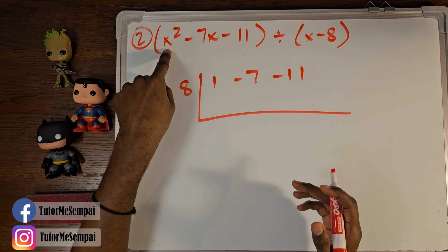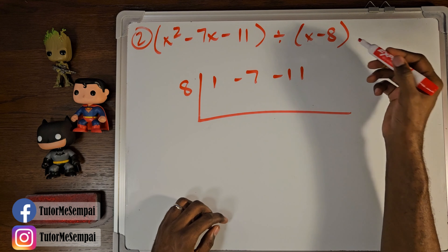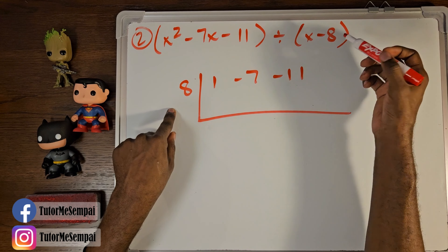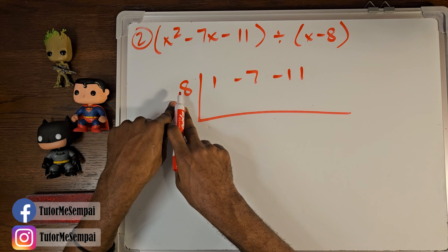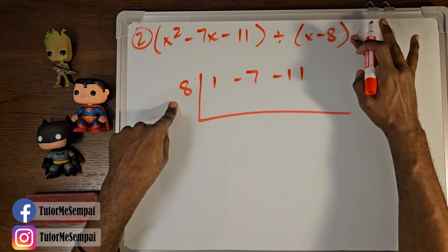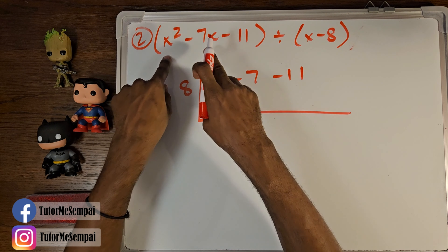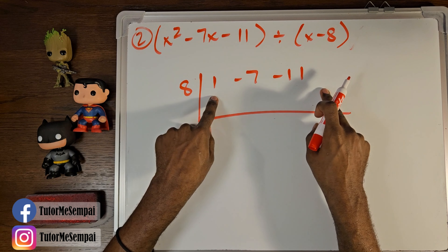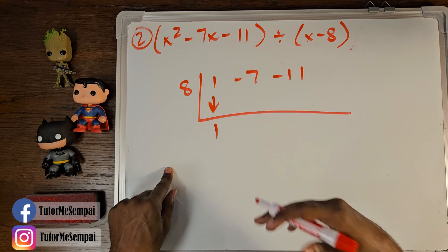In our second example, we have x squared minus 7x minus 11, divided by x minus 8. We're going to set it up the same way. Remember, we're finding the potential root — x minus 8, we solve for that and get positive eight. So that's why you have the eight here. Take the coefficients and plot them inside the house. Notice we're not missing anything, so there are no placeholders needed. Now we simply start off by pulling that first coefficient down — we have a one here — and let's get to mathing.